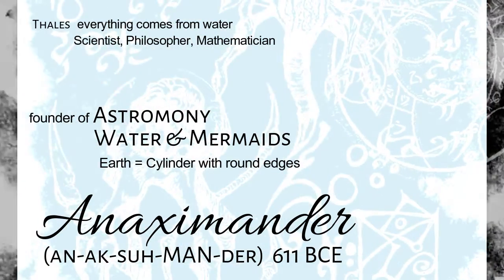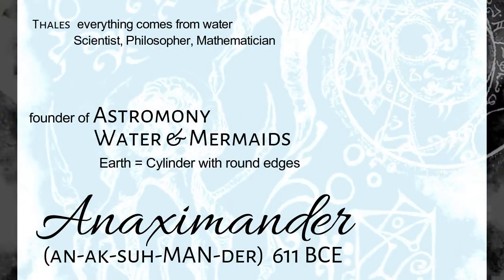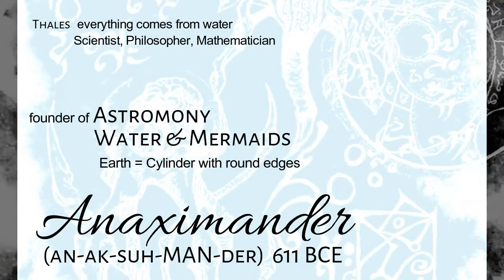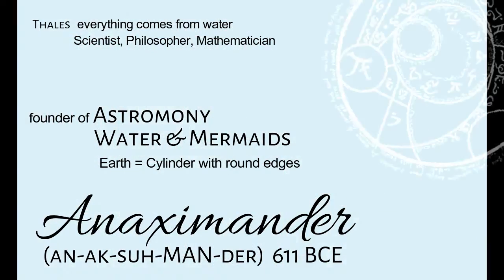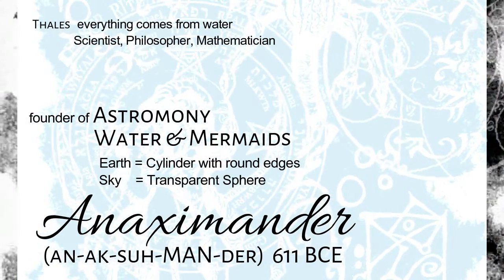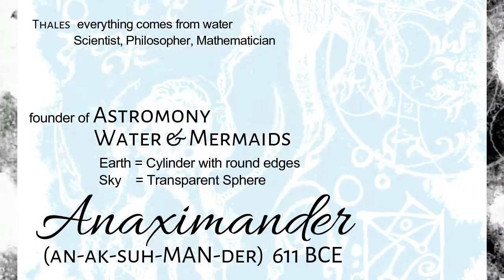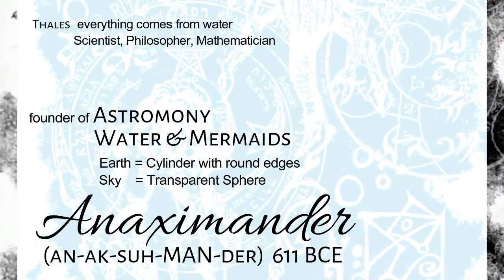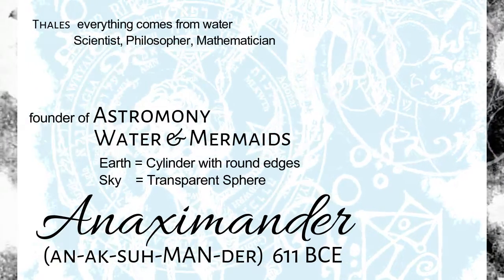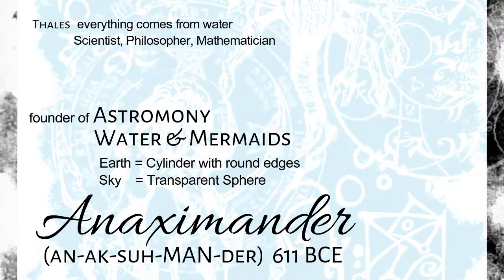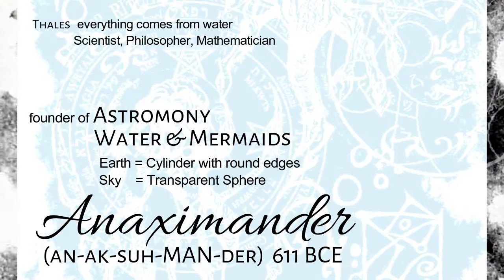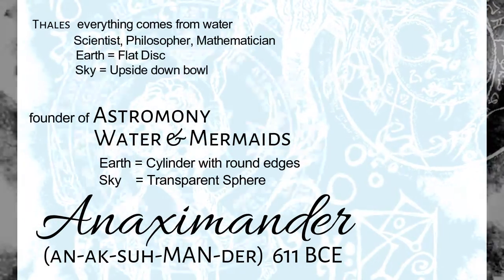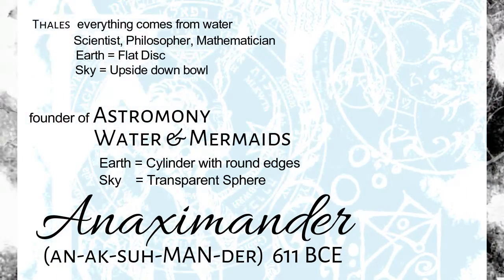Anaximander thought that there were many inhabited worlds, including one on the moon. He thought that the earth was a cylinder with round edges, sort of like a large pail. He believed that the sky was a transparent sphere that held the sun and the stars. Now remember, Anaximander was a student of Thales, but the way they viewed the shape of the earth differed greatly. Thales thought that the shape of the earth was like a pancake, and the sky was an upside-down bowl.